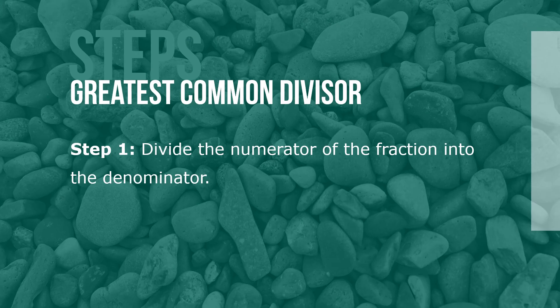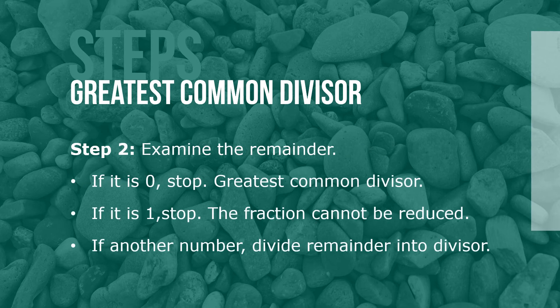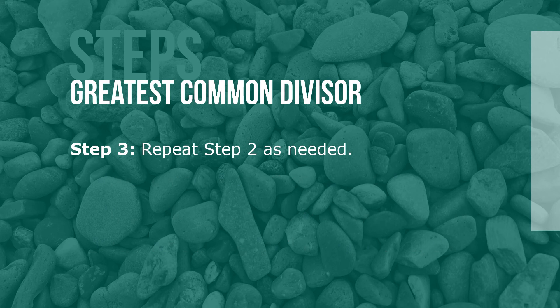Here are the steps for determining the greatest common divisor of a fraction. Step 1: Divide the numerator of the fraction into the denominator. Step 2: Examine the remainder. If it's 0, stop — it's the greatest common divisor. If the answer is 1, stop — the fraction cannot be reduced. If it's another number, divide the remainder into the divisor. Step 3: Repeat step 2 as needed.